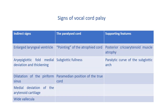Signs of vocal cord palsy can be divided into three categories: indirect signs, the paralyzed cord, and supporting features. Indirect signs include enlarged laryngeal ventricle, aryepiglottic fold medial deviation and thickening, dilatation of the piriform sinus, and medial deviation of the arytenoid cartilage. Direct cord signs include pointing of the atrophied cord, subglottic fullness, and paramedian position of the true cord. Supporting features include posterior cricoarytenoid muscle atrophy and paralytic curve of the subglottic arch.